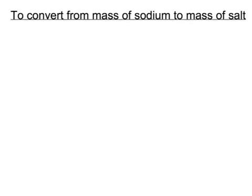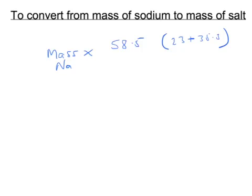In summary, if you have a mass of sodium and need to work out the equivalent mass of salt, use the multiplying factor NaCl over Na. Multiply the mass of sodium by 58.5 — which is 23 (Na) plus 35.5 (Cl) — divided by 23 (the mass of sodium), and that gives you the mass of salt, NaCl.